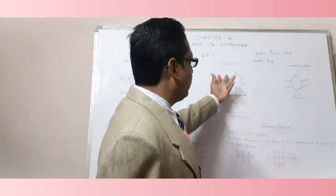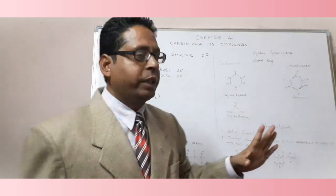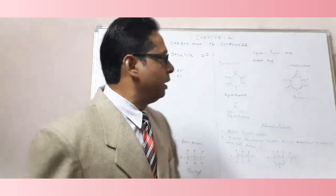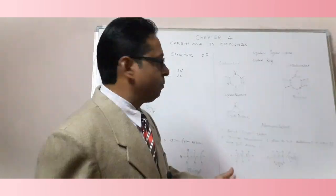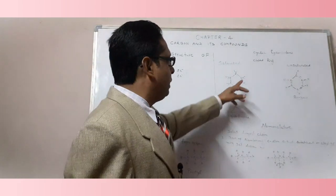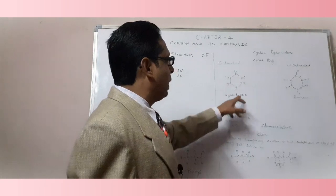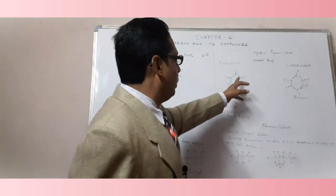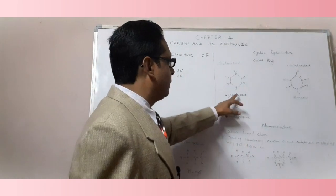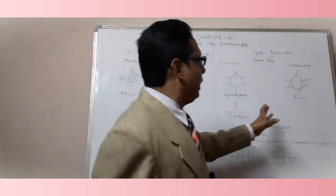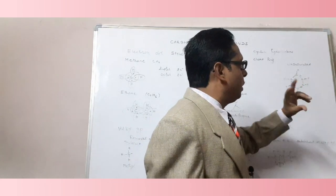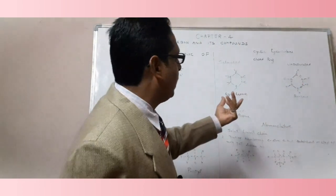Hydrocarbons can also be depicted by a closed ring, which is why they are known as cyclic hydrocarbons — a closed ring or closed path. The first example is cyclohexane: 'cyclo' means closed ring, and 'hexane' means there are six carbon atoms, numbered one through six from any side.